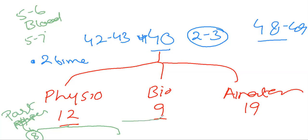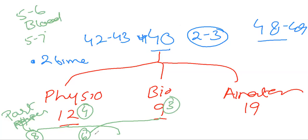For example, if you have kept BioChem in 9 days, then you have completed it in 6 days. Now you have only 4 days in Physio and 3 days left according to your distribution. Now you have to use the 4 days in Physio and you have to do it again.